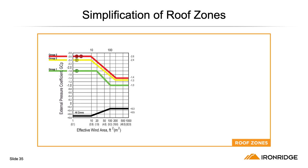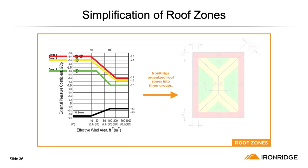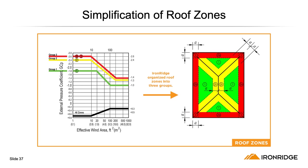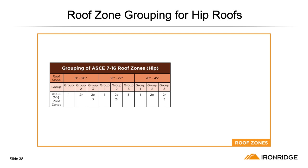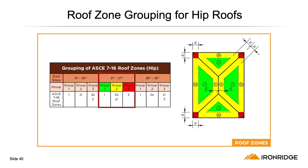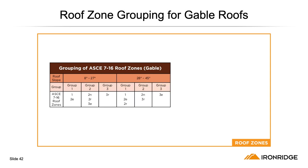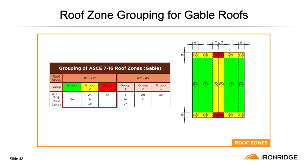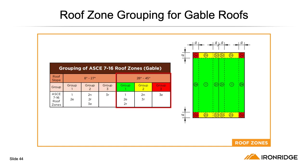If you're familiar with our certification letters, you know that we typically provide a maximum rail span for each roof zone. With all these new roof zones, that could get complicated pretty quickly. However, we were able to analyze the wind pressure coefficients and group those zones — this simplifies things by organizing the zones into 3 groups. The cert letter span table shows our grouping method for hip and gable roof zones, and as the roof pitch changes, the groupings change as well. When pressure coefficients change as the roof pitch increases or decreases, that's going to be reflected in our certification letters.